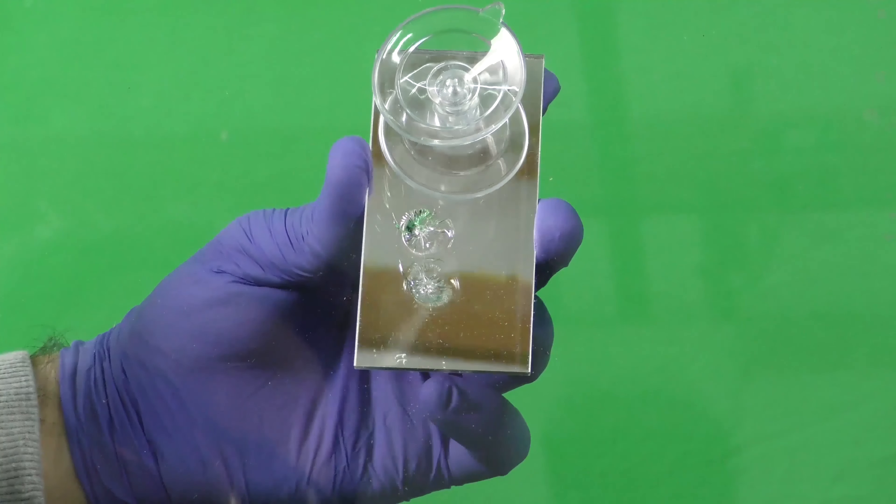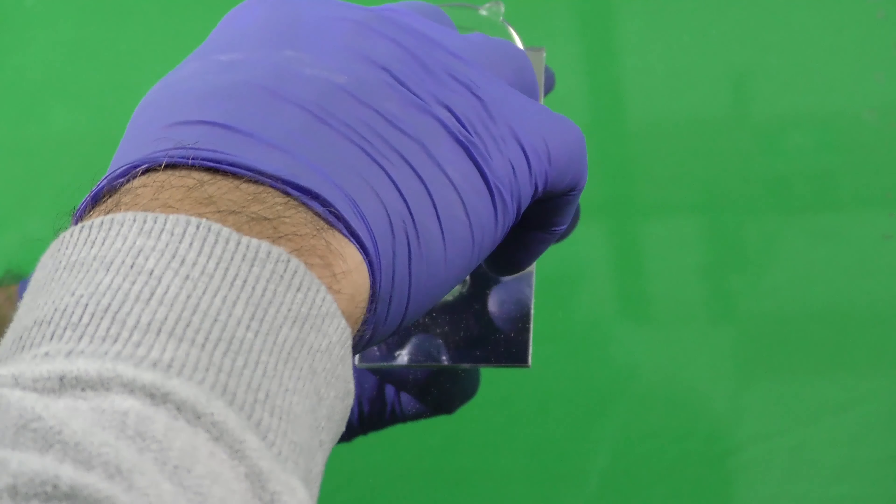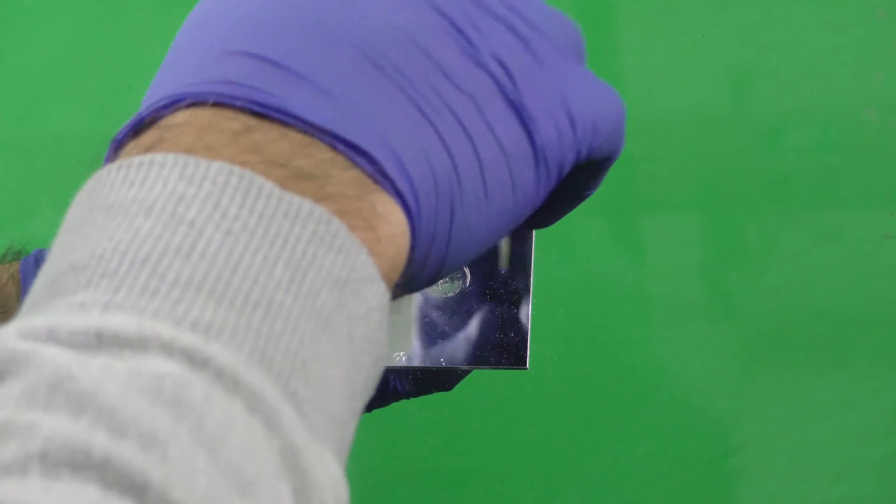Place the mirror directly behind the impact area. This will give you a view of the repair from the back while you're doing the repair.